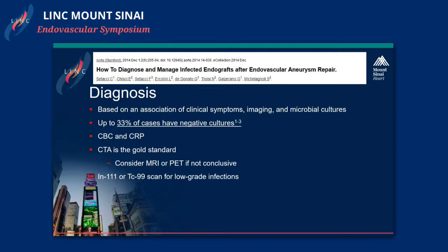We need to look at the CBC and CRP — you can have an elevated white count and elevated CRP. CTA is the gold standard for diagnosing infected aortic endografts. When things are not clear, you can consider other modalities, including white blood cell scans.